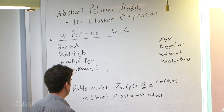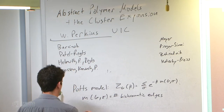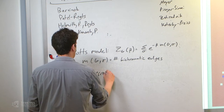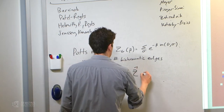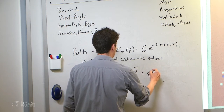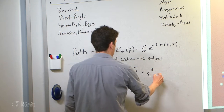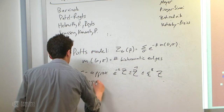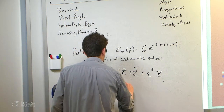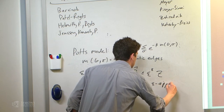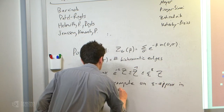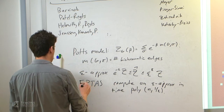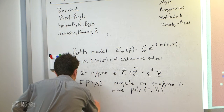Let me give a few definitions. We have the Potts model, and our goal is going to be to approximate the partition function or to sample. An epsilon approximation is a value z-hat such that z-hat is at most e^epsilon times z and at least e^{-epsilon} times z. An FPTAS means we want to compute an epsilon approximation in time polynomial in n and 1/epsilon. The class of graphs I'll talk about today is expander graphs. An alpha-expander is a graph where the number of edges exiting a vertex set S — denoted ∂S — is at least alpha times |S|, for all S of size at most n/2.